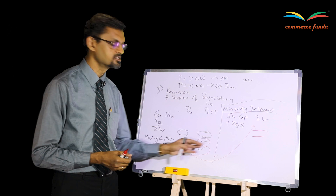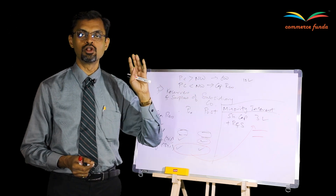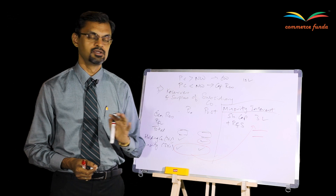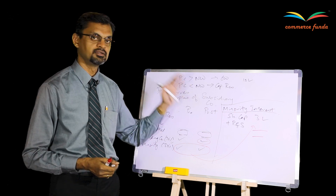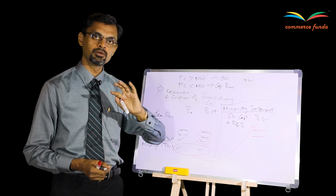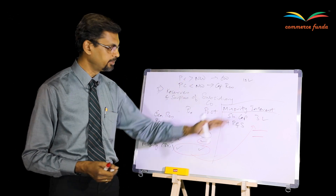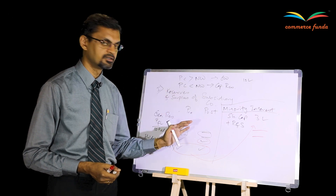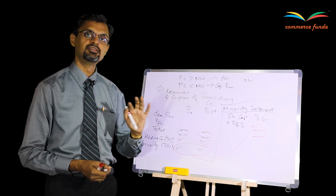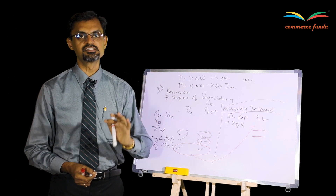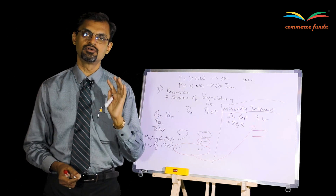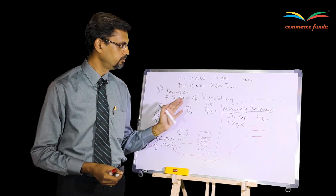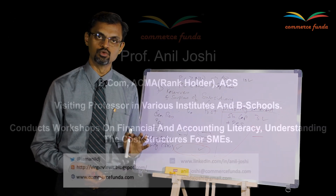This is how all four numbers from the first working note are considered in consolidation of balance sheet. Remember these three standard working notes — don't make any mistakes in preparing them, and once done properly, there are very few chances you will make mistakes in the consolidated balance sheet. I hope I have made this simple for you. Thank you.